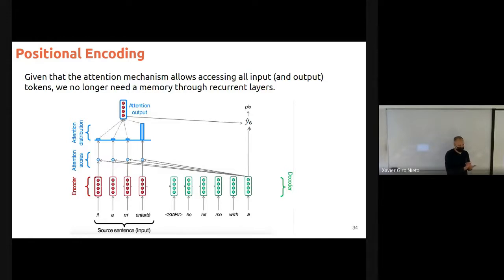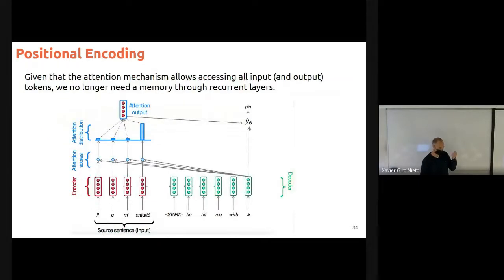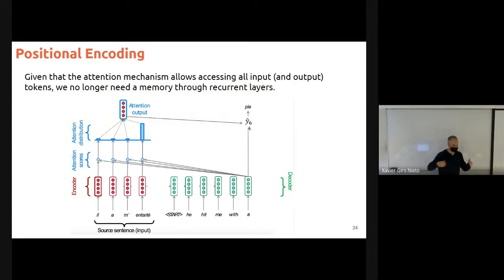If we don't need recurrency any longer, that's what motivated the paper that introduced the Transformer to be named 'Attention is All You Need.' The key idea was: you don't need recurrence because with attention, that's all. And that's great because recurrent networks are quite painful to train — you need to compute the previous output before computing the next one, so it's a sequential mechanism. Transformers, with attention, allow you to access all the data at the same time. There's no sequentiality in Transformers.